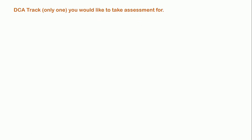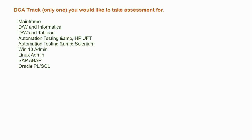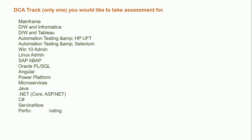The DCA track options are: Mainframe, DW and Informatica, DW and Tableau, Automation Testing and AMP, HP UFT, Selenium, Windows 10 Admin, Linux Admin, SAP Web, Oracle PL/SQL, Angular, Power Platform, Microservices, Java, .NET, THASH, ServiceNow, Performance Testing, iOS, Android, Python, and Scala. You can choose any one of these as per your convenience. The link to register for this survey will be provided in the description.